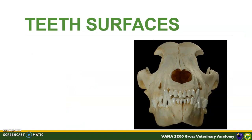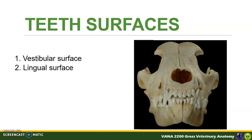It is also important to learn the surfaces of the teeth. There are four surfaces present. Vestibular surface is the surface of the teeth that faces the lip or cheek. It is formerly called the labial or the buccal surface. This is the surface of the teeth facing the vestibule of the oral cavity. The lingual surface is the surface of the teeth that faces the tongue. If you put your tongue at the back of your incisors, that surface touched by your tongue is the lingual surface.